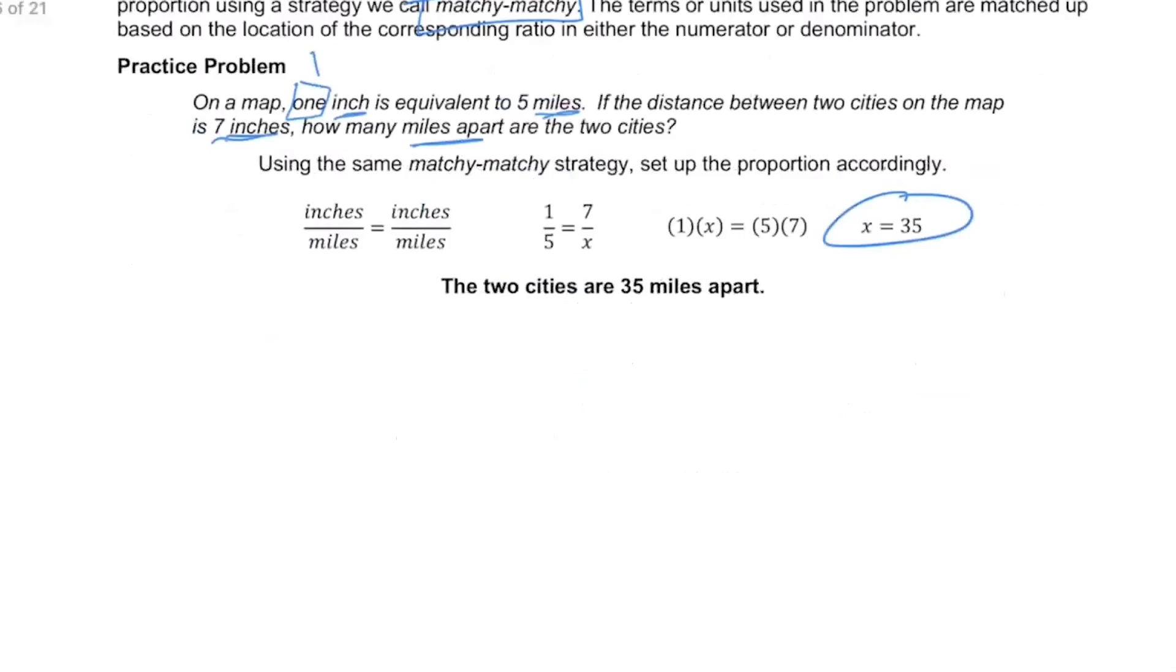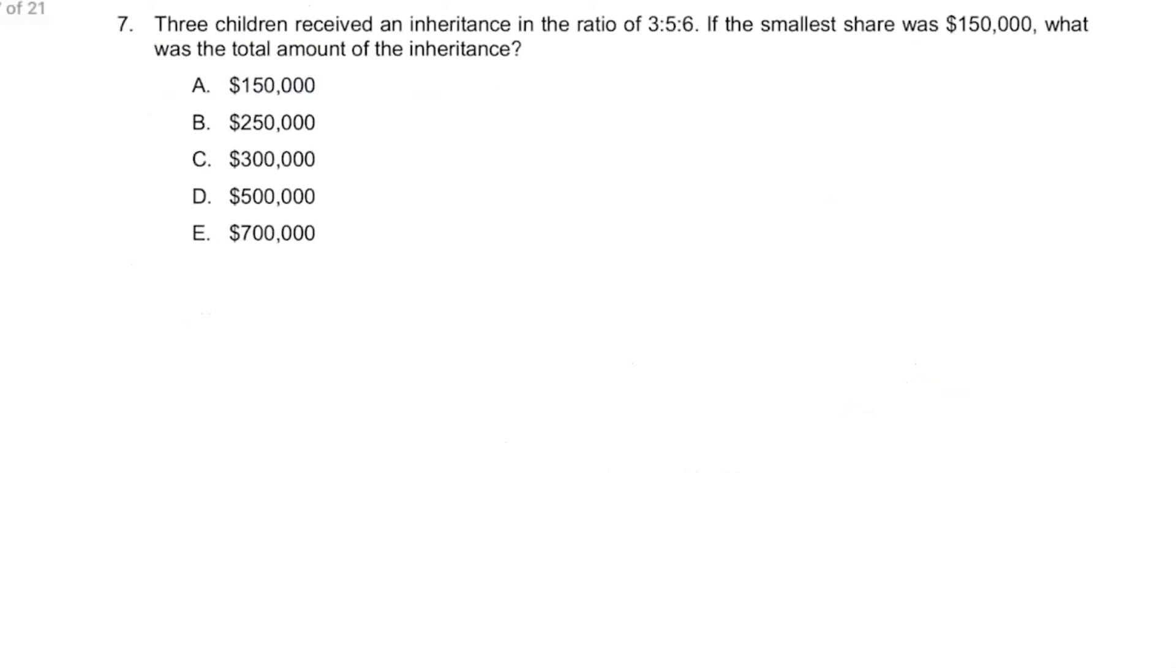Then they give us these types of proportions. We have a problem here where it says three children receive an inheritance in the ratio of 3:5:6. If the smallest share was $150,000, what was the total amount of the inheritance? When we get these compound ratios where it's more than one, we know it's something that we're not used to seeing a lot of, so we have to make sure that we're comfortable in doing this. It's telling us what we want—we want the smallest share, so we got children, inheritance, smallest share, and then total amount.